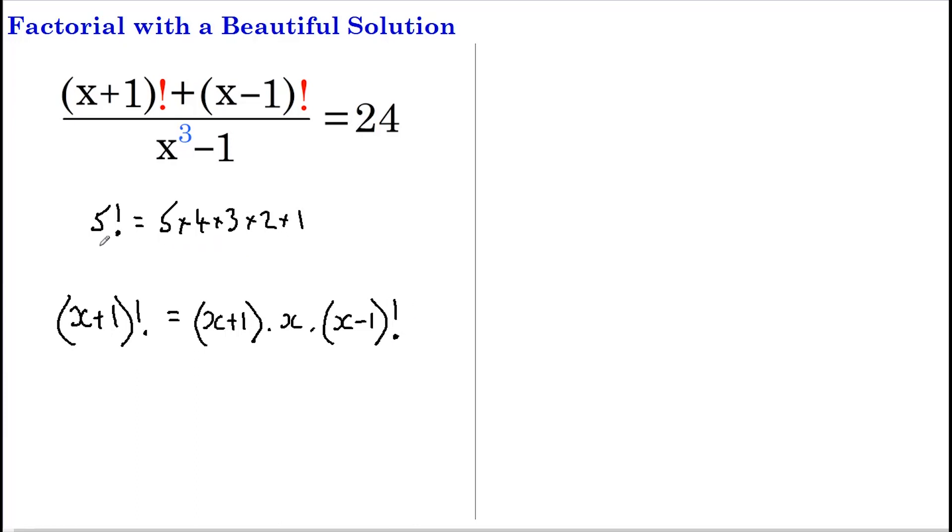This is the same as saying that 5 factorial equals 5 multiplied by 4 multiplied by 3 factorial. If you think about it, you'll see that this actually does make sense.